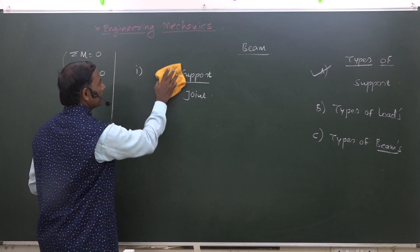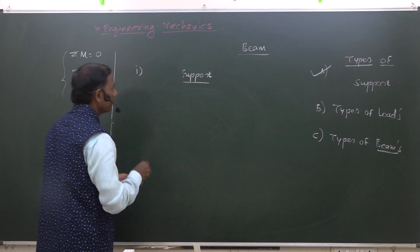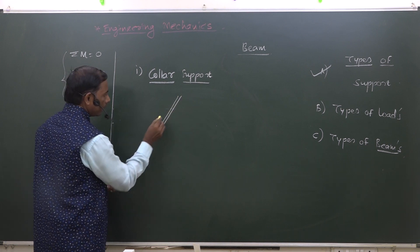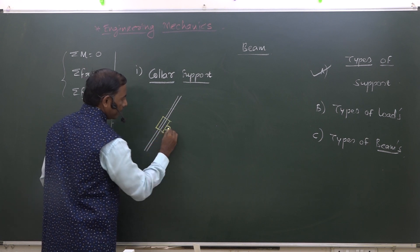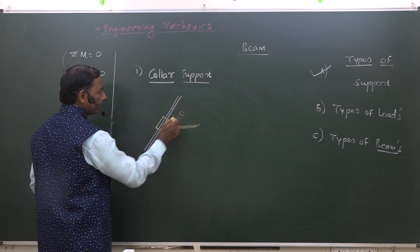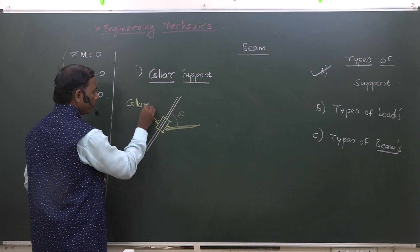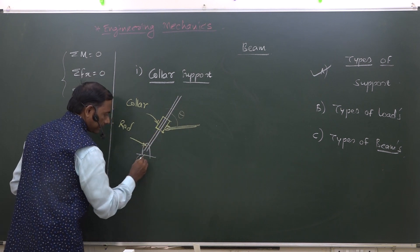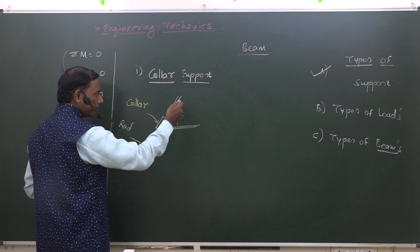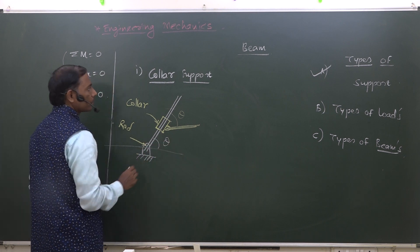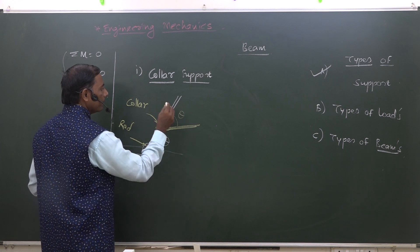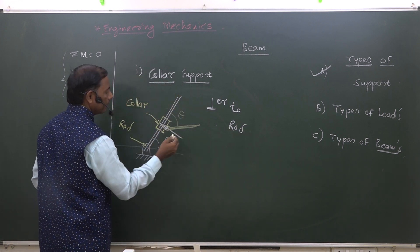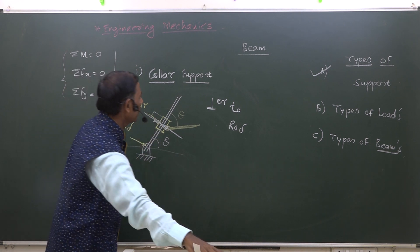The last type is called collar support. In a collar support, there is a rod on which a collar is moving, and this collar is joined to another member. Whatever the angle, the collar moves on the rod with upper or lower motion. It also has radial motion inward and outward, and motion at some angle theta. Such a type of support has only one reaction, which is always perpendicular to the rod.